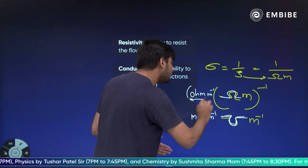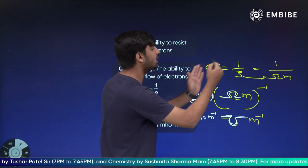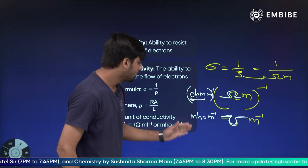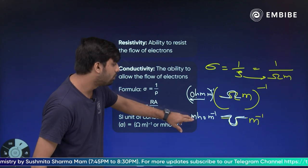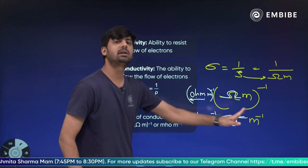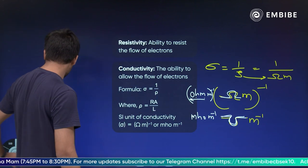Both ohm and meter together ka inverse, ya iska symbol ka naam ho gaya mho aur yeh meter inverse ka meter inverse. To mho phir pure ke liye inverse nahi hai sirf meter ke liye inverse hai. Samajh mein aa gaya, so hum yaad rakh sakte is tarah se.